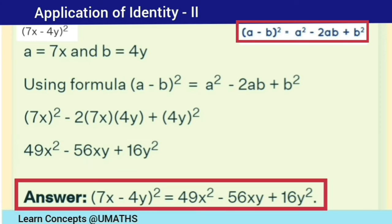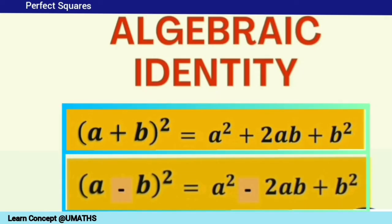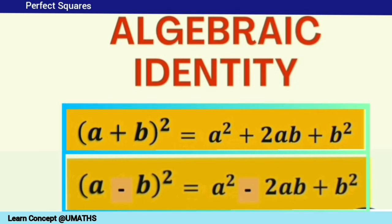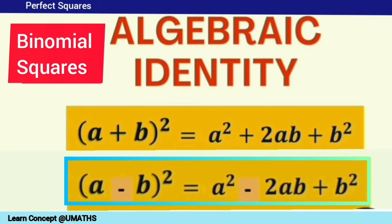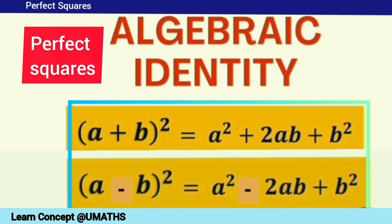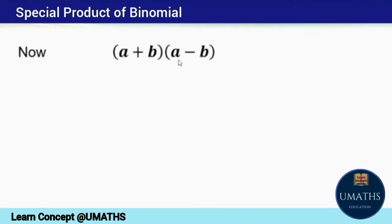I hope you got the same answer. The first identity is the perfect square of the sum of a and b, and the second identity is the perfect square of the difference of a and b. Basically, these identities help us expand algebraic expressions of the same form. Let's move on to the third identity.